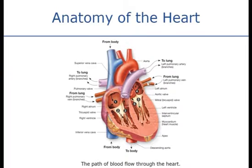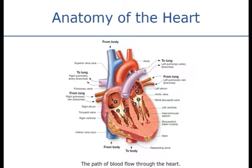The pulmonary vein dumps blood into the left atrium, where it then goes through the mitral valve into the left ventricle, and the left ventricle pumps it out the aorta to all parts of the body. It's important as an EMT that you understand the flow of blood.